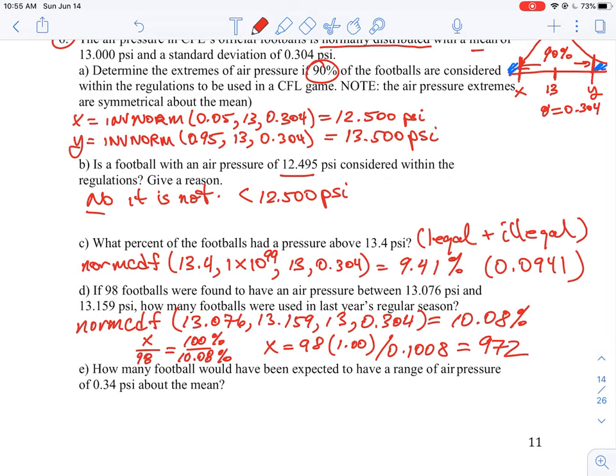And then it says here for E, how many footballs would have been expected to have a range of air pressure of 0.34 around the mean? So what we need to do for this is calculate what is the percentage of the footballs that are within 0.34 of that. So again, use your norm CDF function. The lower range here is going to be the mean minus the value, 0.34, because we're looking at the range, and then the upper range is going to be the mean plus the value. And then we have the mean itself, and then the standard deviation, and we find out that this is roughly 42.40%.